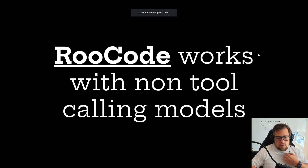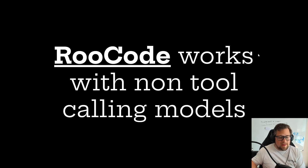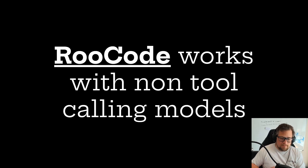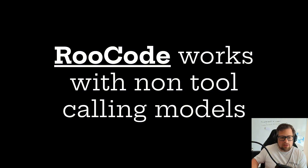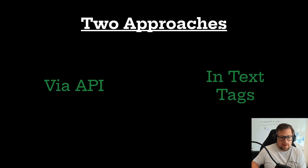The first thing I want to talk about is that Roo Code works with non-tool-calling models, and this is something a lot of people have argued with me on. It's relatively simple — tool calling is nothing special. It's basically a wrapper around prompt engineering. When you really think about it, there are two approaches.